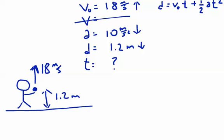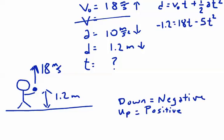So looking for time means we don't need velocity, so we use our don't need v equation: d equals v not t plus 1 half at squared. Plugging in our numbers, making down negative, we have negative 1.2 equals 18t, and half of negative 10 is just minus 5, so minus 5t squared.